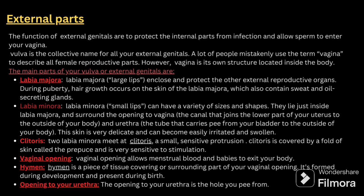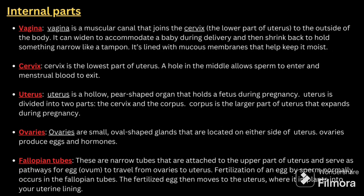The external parts: the function of external genitals is to protect the internal parts from infection and allow sperm to enter into the vagina. Vulva is a collective term used for the external genitalia. The main external parts include labia majora, labia minora, clitoris, vaginal opening, hymen, and opening to the urethra.